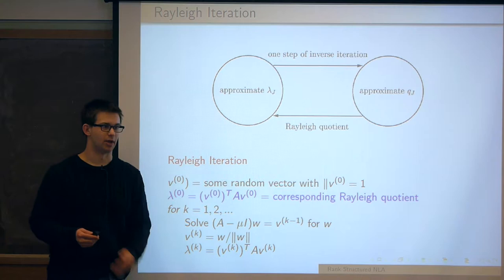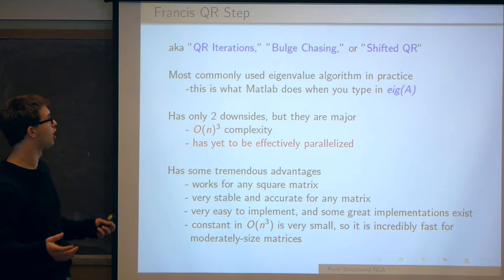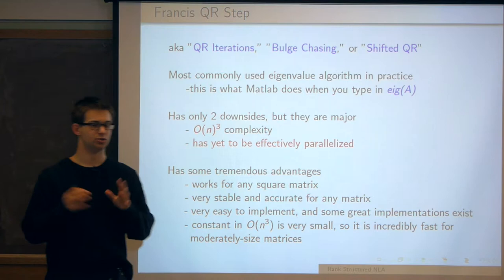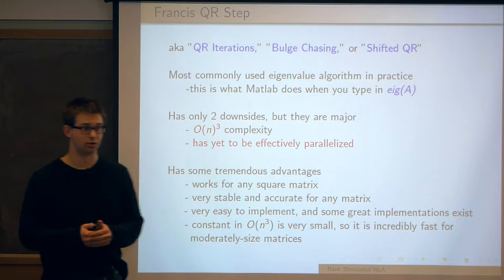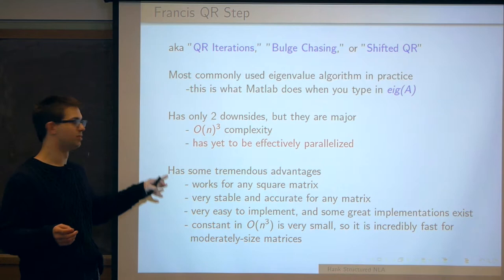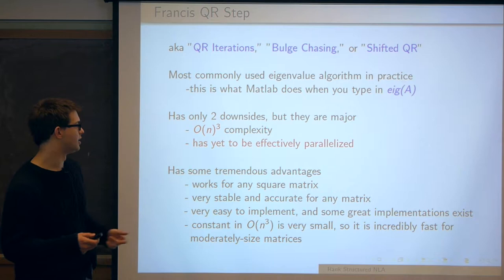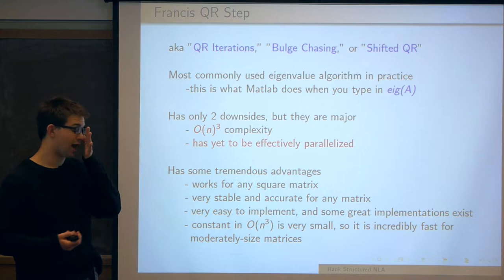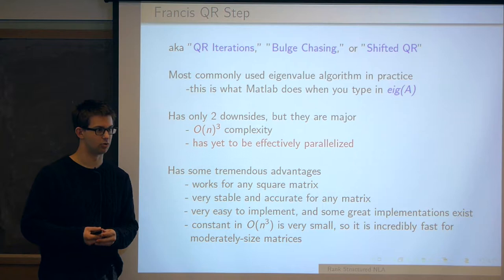Now I'm going to talk about the Francis QR step — you might know this as QR iterations, shifted QR, or bulge chasing. Basically, this is what your computer does when you type 'eig' in MATLAB or use the basic general purpose LAPACK routine. It's about 50 years old, but still to this day one of the fastest algorithms for any type of matrix. Its only downsides are O(n^3) complexity — which for larger and larger matrices is not feasible — and it has yet to be effectively parallelized. Communication costs in 2015 are even more important than the complexity of operations, so this is probably not going to be used a lot in the future, but it has really dominated the eigenvalue landscape of the past 50 years.